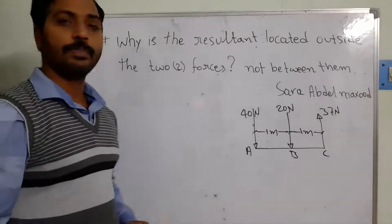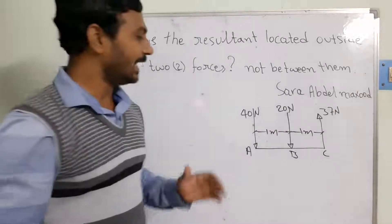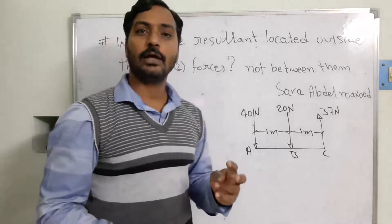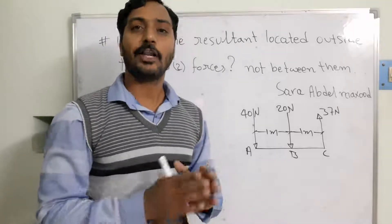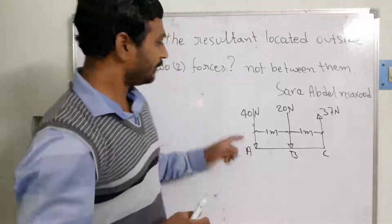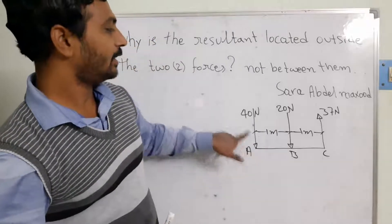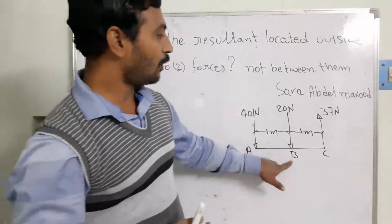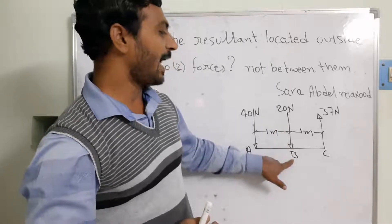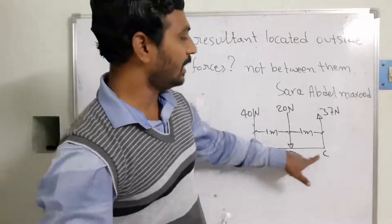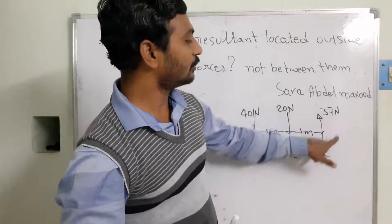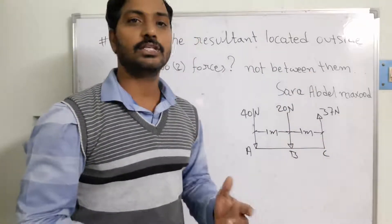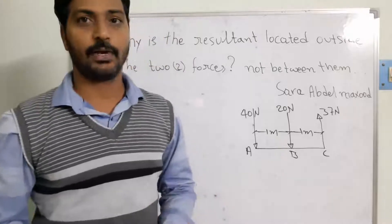I have taken a beam AC and subjected it to three forces in opposite directions. At point A, a 40 Newton load is acting in the downward direction. At point B, a 20 Newton load is acting. And at point C, 37 Newtons is acting towards the upward direction. Now, how do we find out the resultant component?